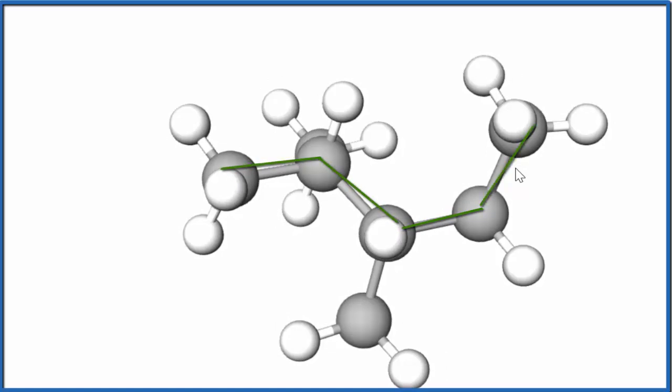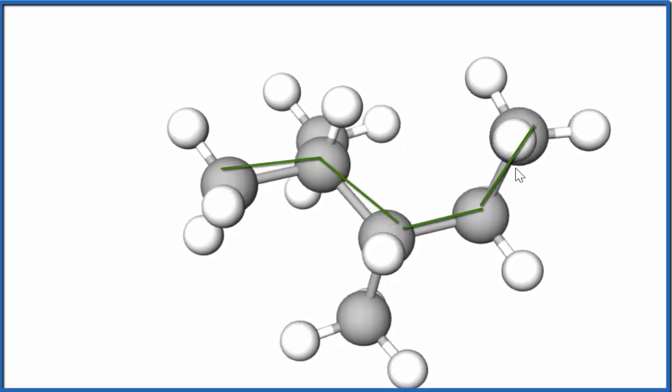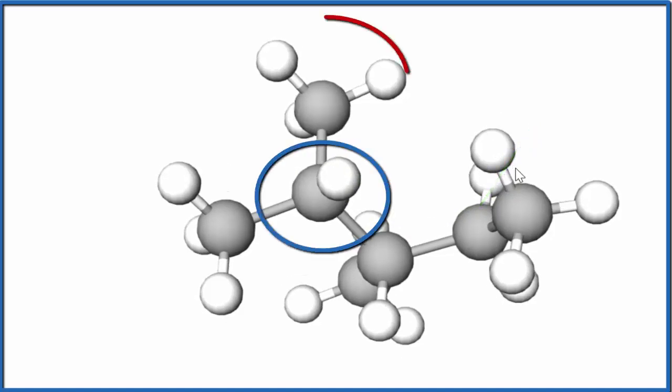We can see we have one, two, three, four, five - a chain of five carbons. On the second carbon here, we have the methyl group.